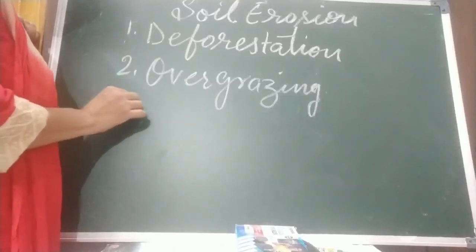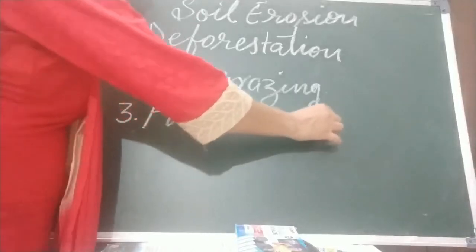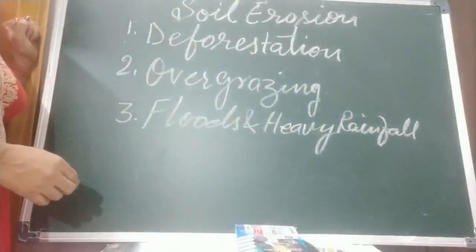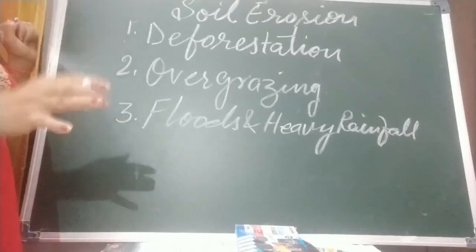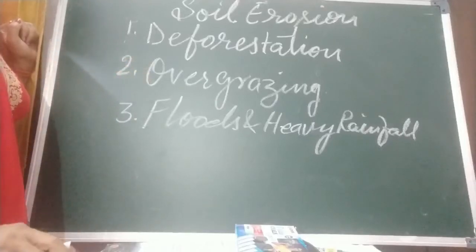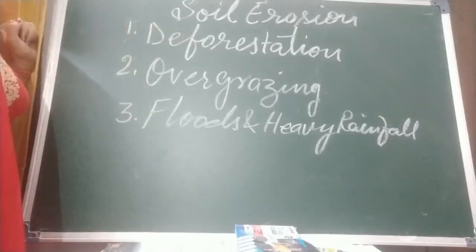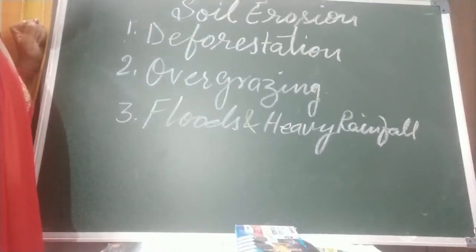Third is floods and heavy rainfall. Nowadays you can see on television and in the news — so many places are flooding, like in Maharashtra, Gujarat, and Bihar. The land is submerged in water and plants along with soil move along with the heavy flow of water. Flood and heavy rainfall wash away soil, especially when there are no trees and the land is lying bare.